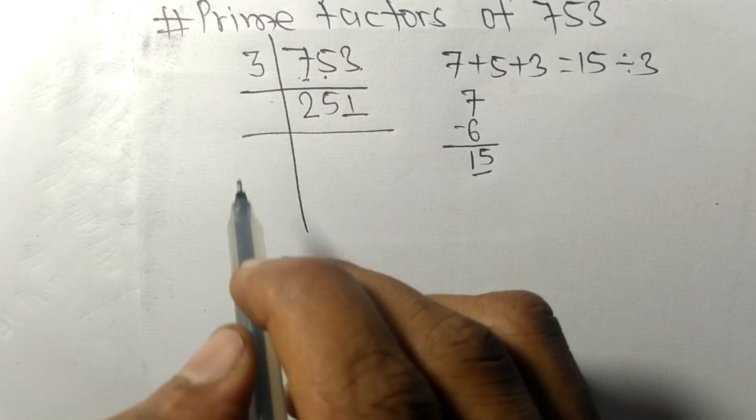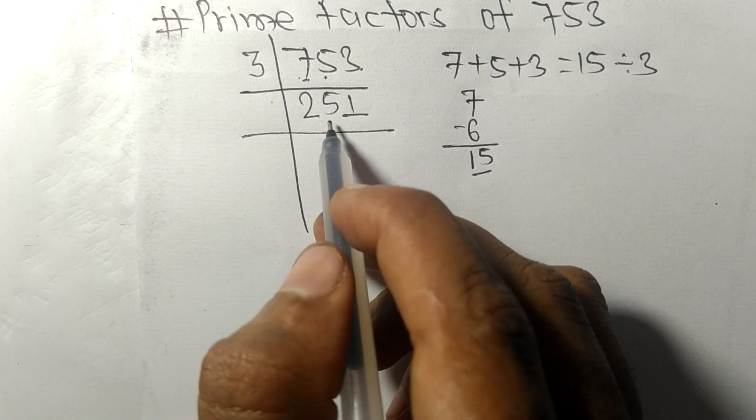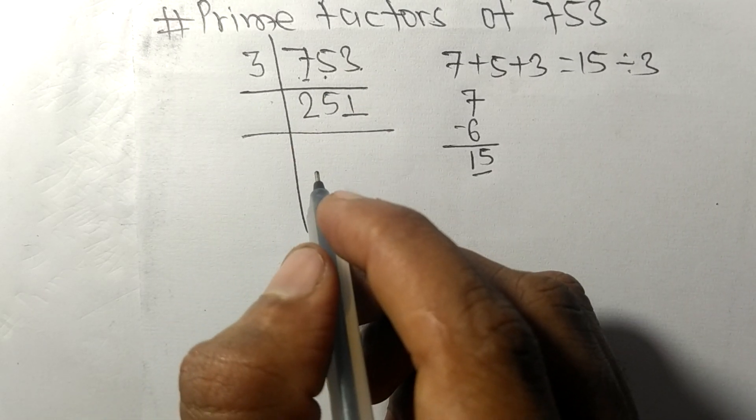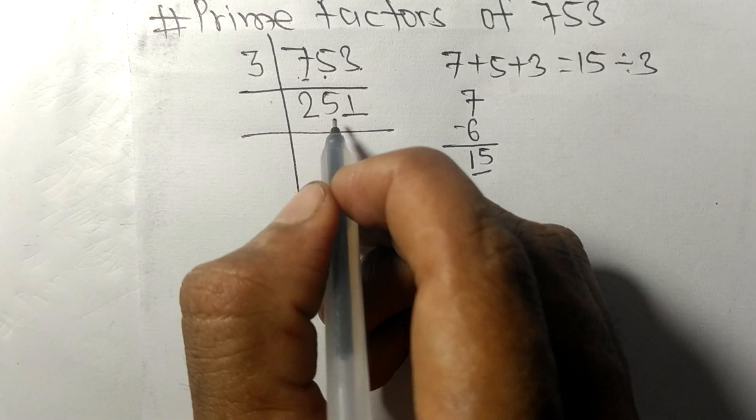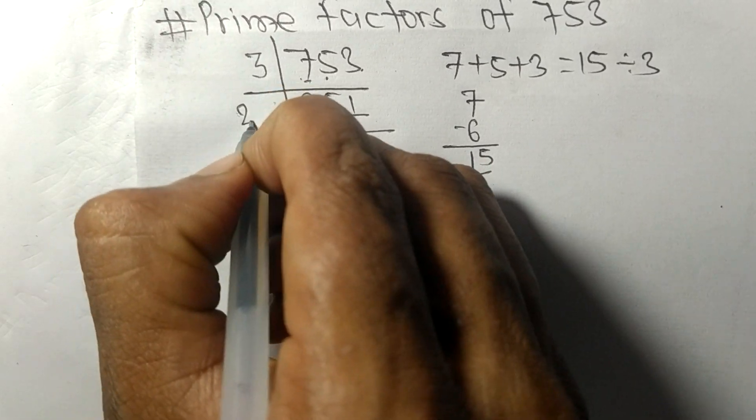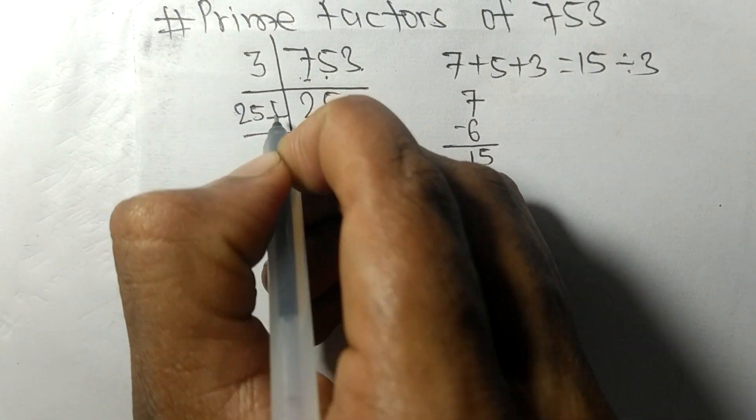So now 251 is a prime number, so it is exactly divisible by 251 only, and on dividing we get 1.